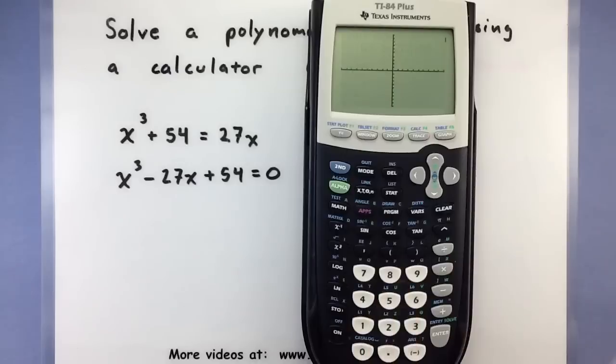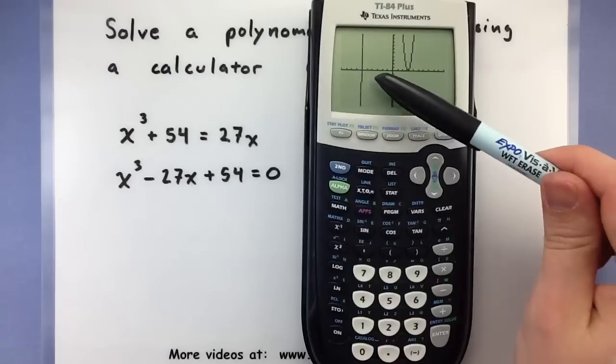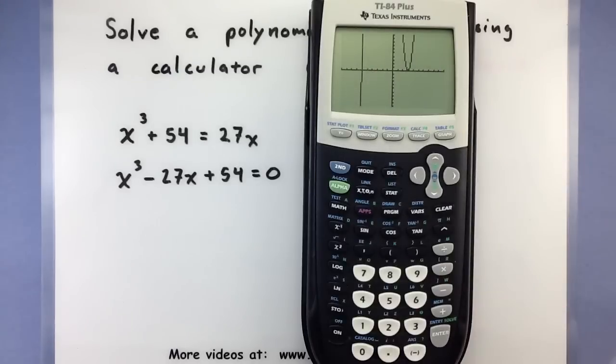Go ahead and go to the graph screen to see if we can get a good picture as to what this looks like. Now I'm using a window from negative 10 to 10 on my x's and negative 10 to 10 on my y's. So it looks like this has a couple of spots that could be solutions.